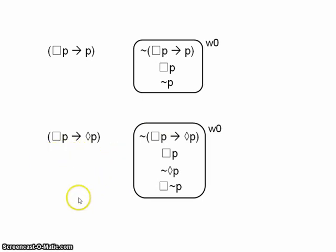Now, what this means is that in k, p can be both necessary and false, and p can be both necessary and not possible. And that's quite odd.